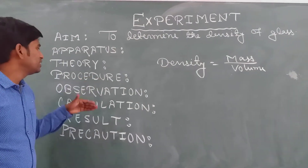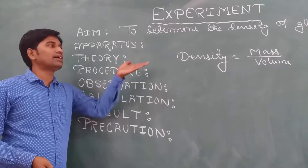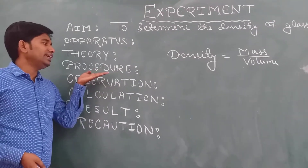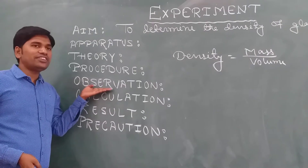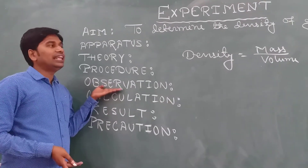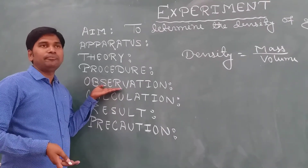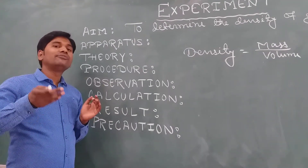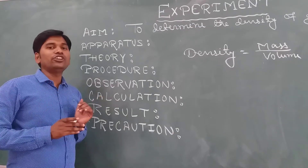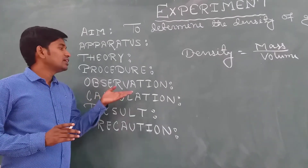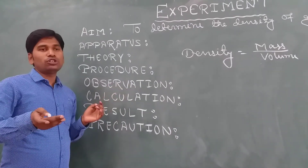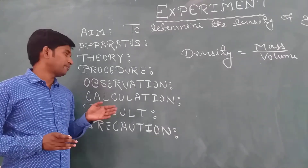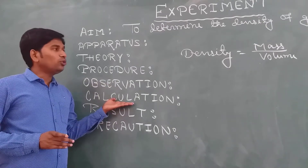Procedure means how we are finding the mass and volume. For observations, we will measure the length two or three times and take the average or mean of that length. Similarly, we will calculate the breadth two or three times and take the average.